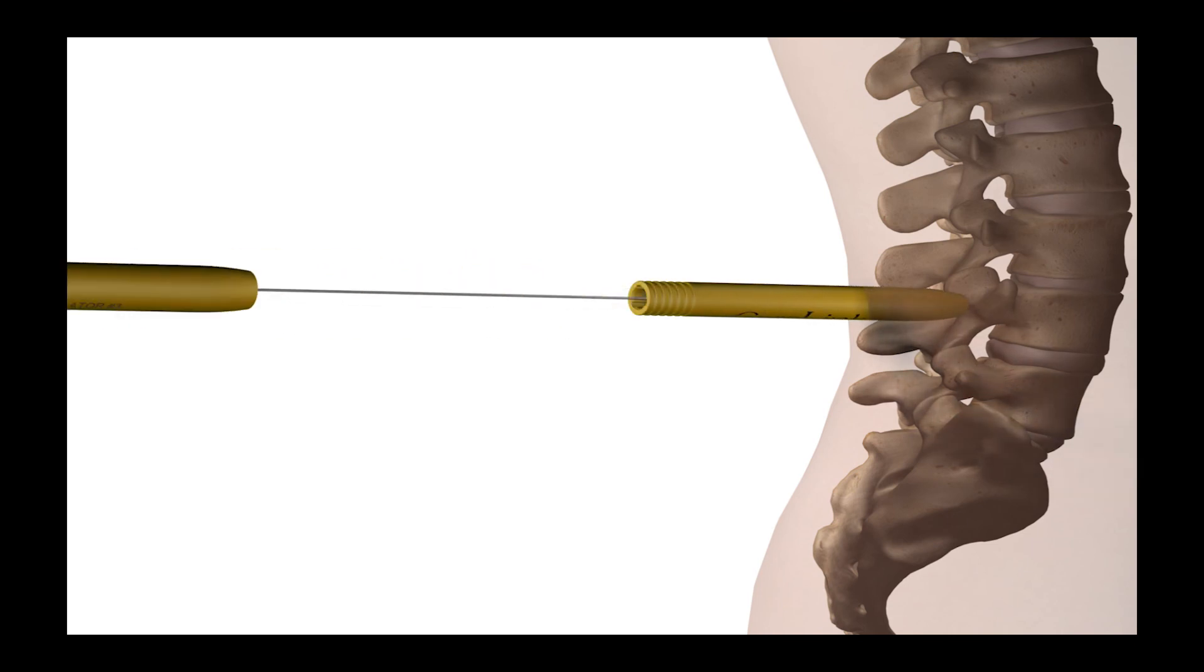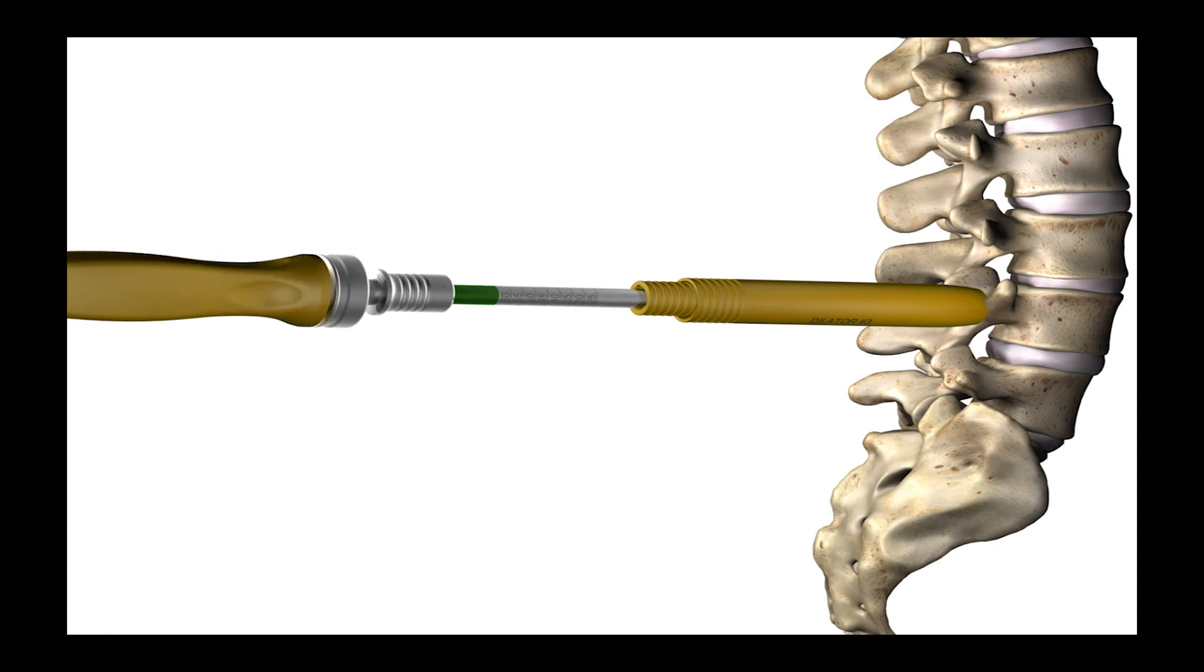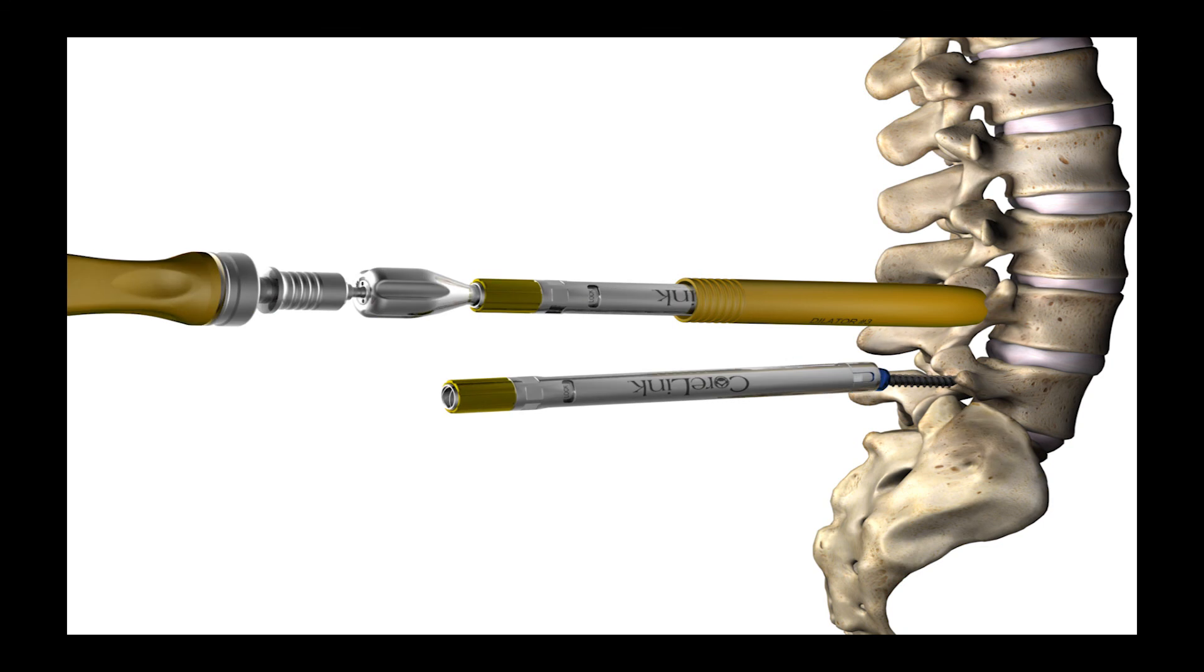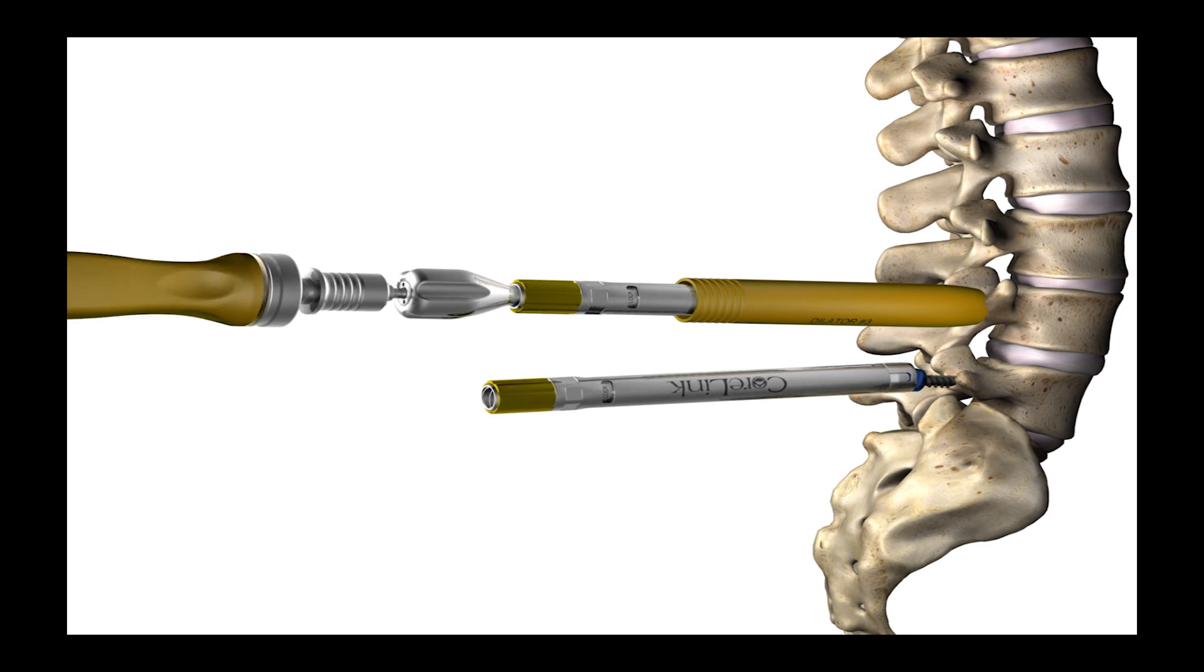Subsequent dilation is performed to access the surgical area. The tap is used prior to screw insertion. The dilator is removed and the process is repeated at the next level.